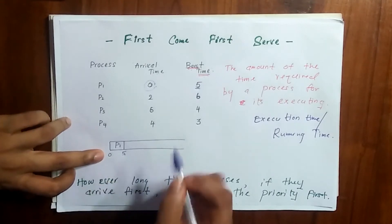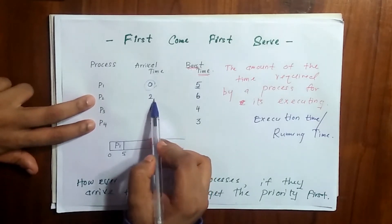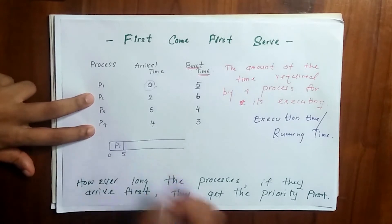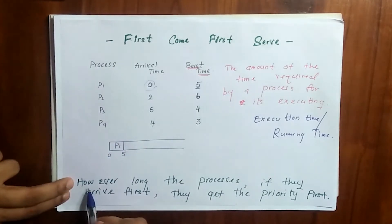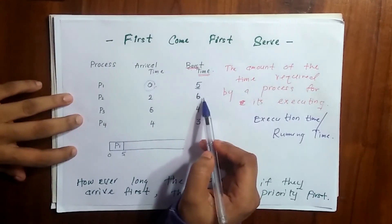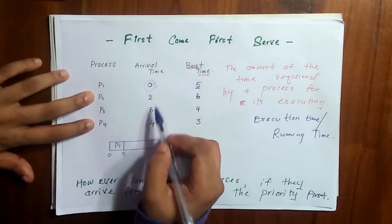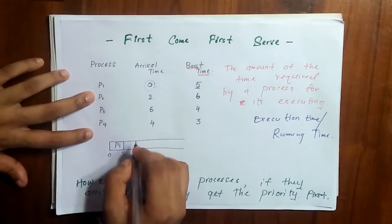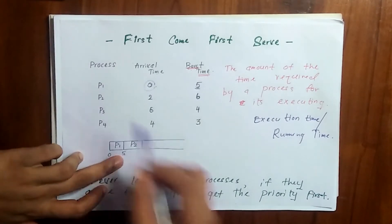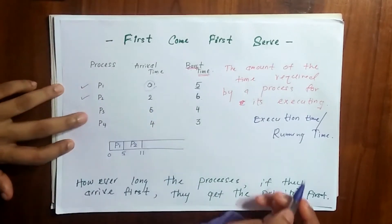Within this 5 milliseconds, P2 and P4 also arrive because their arrival times are 2 and 4. From these two, we have to ignore the burst time — whoever arrives first gets priority first. So P2 comes before P4, and we write P2 next. We add its burst time 6 to 5, giving us 11.